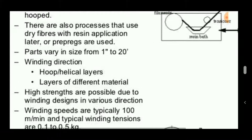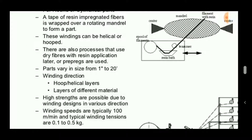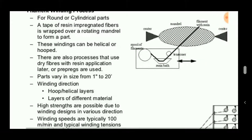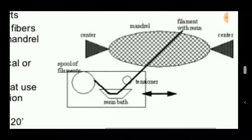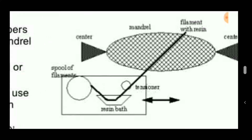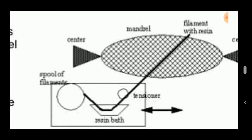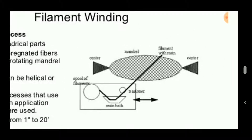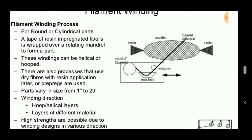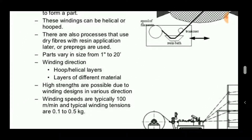The winding direction can also improve strength properties. If wound in a single direction — left to right — the strength is very low and it will tear easily when pulled. If wound helically in both directions, the strength is increased. The winding direction may be hoop or helical, and layers of different materials can be used.